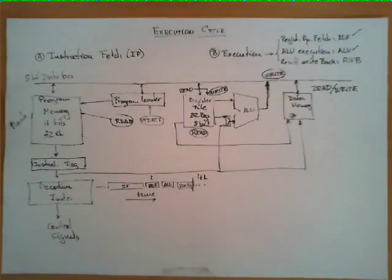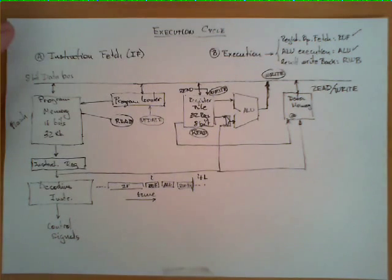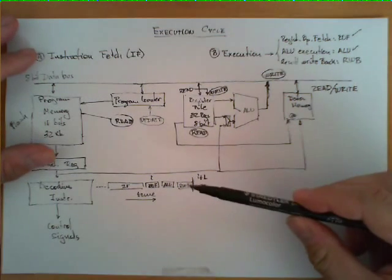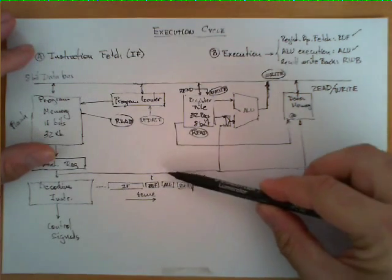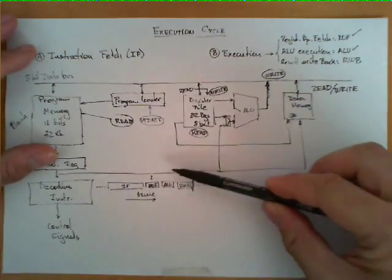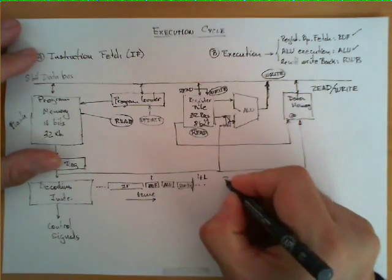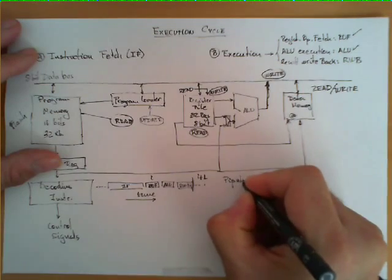Most of the improvements on a microprocessor in terms of performance — to achieve faster execution of instructions — are derived from optimizations on this execution cycle. One of the most common techniques is called pipelining.